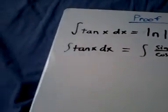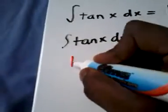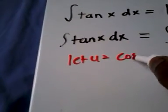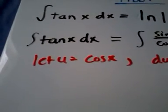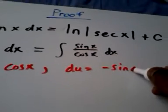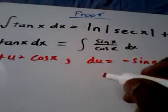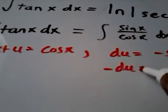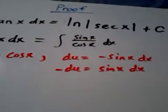Alright, now what we're going to do is a u-substitution. So let u equal cosine of x. So then our du equals negative sine of x dx. Now let's rewrite this. So now we have negative du equals sine x dx.